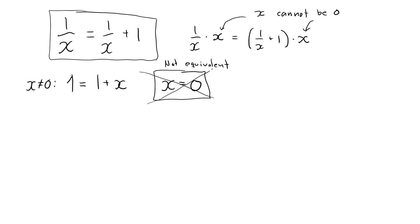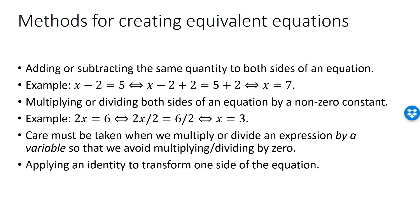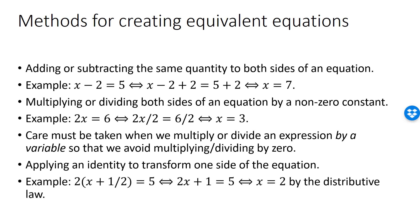Another trick is to apply a known identity to transform one side of the equation. For example, to solve 2(x + 1/2) equals 5, I apply the distributive law to the left-hand side. That gives 2x plus 1 equals 5, which has the solution x equals 2.